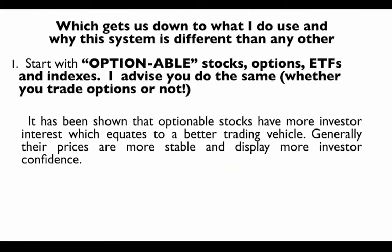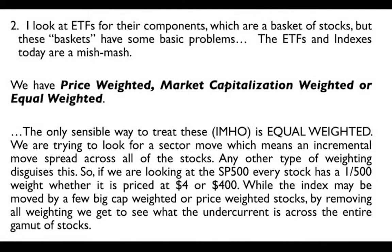What we're going to show you is exactly what our indicator is based on and how it works. First, we only cover ETFs and stocks that have options available — it's been proven these have much more investor interest and make better trading vehicles with more stable prices. We also look at ETF components as baskets of stocks. In our opinion, the only sensible way to weight them is equally — so in the S&P 500, every stock has a 1/500th vote, whether priced at $4 or $400.